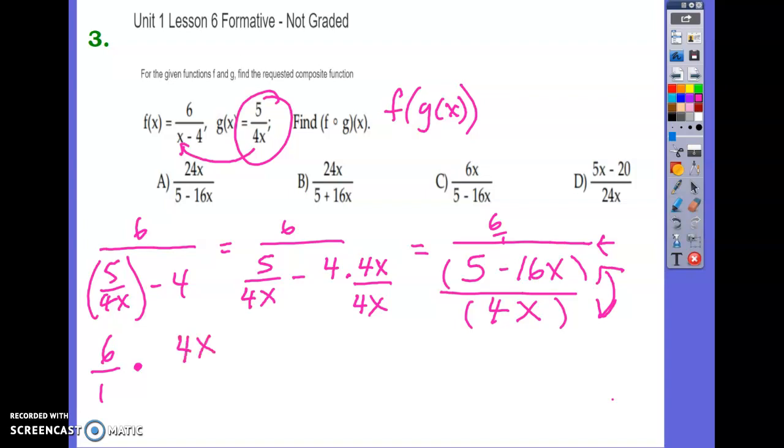So our numerator will now be 4x, and the denominator will be five minus 16x. That's a minus. So we are multiplying by the reciprocal.